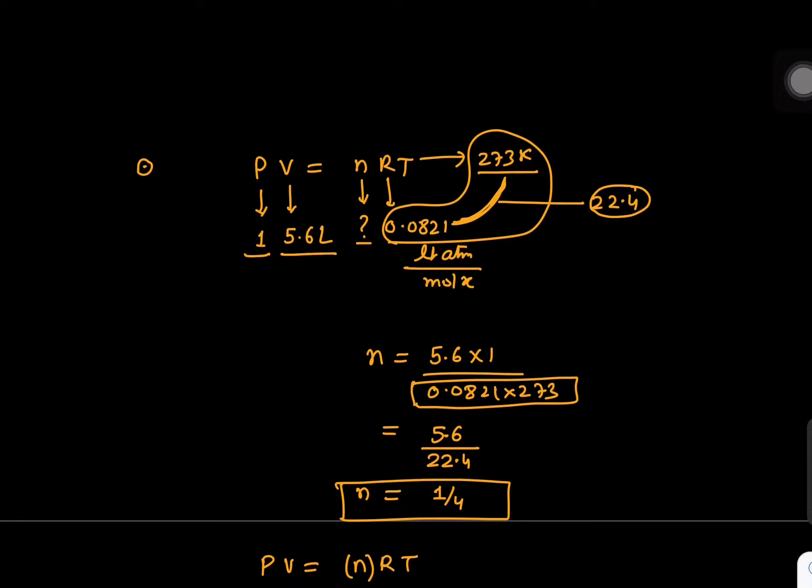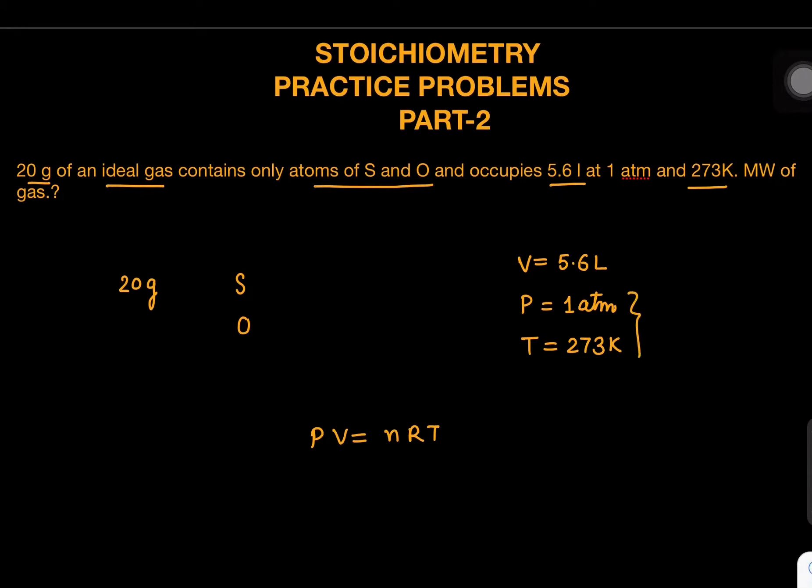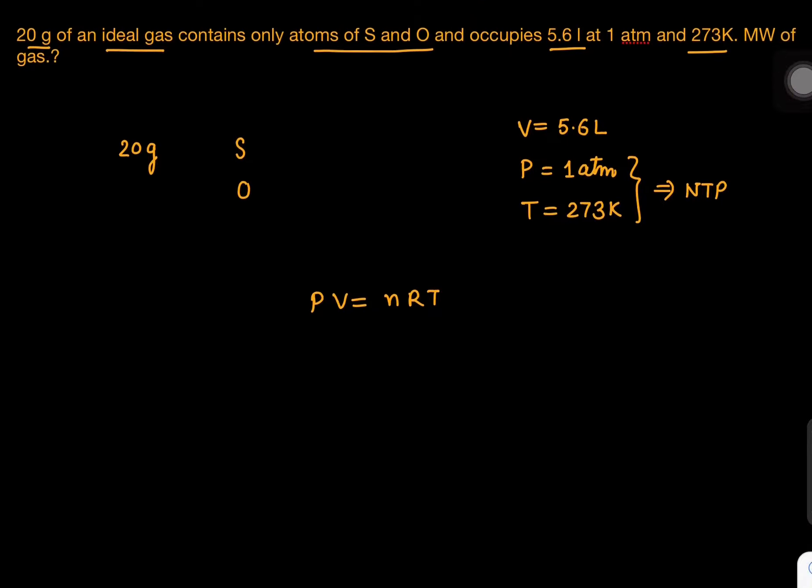This condition when P is 1 and T is 273 has a special name called NTP. Though we write STP also in this place, NTP is more logical. We can say this is NTP or STP condition.